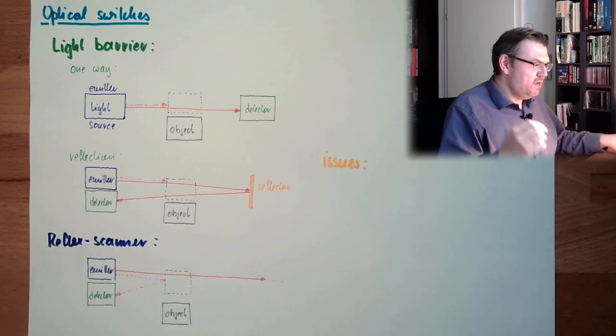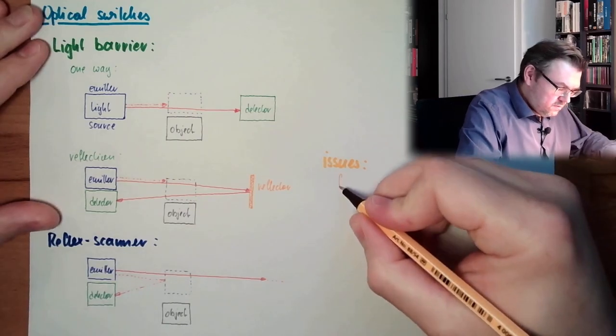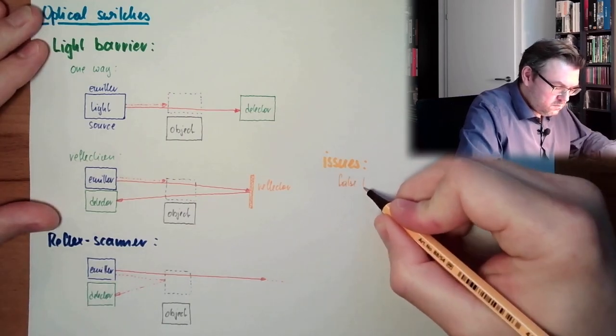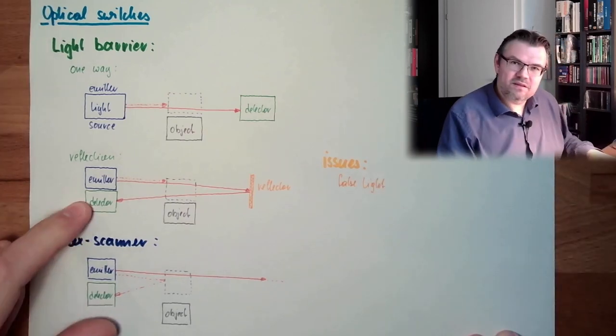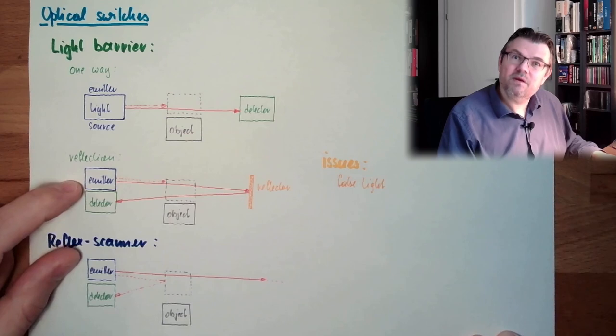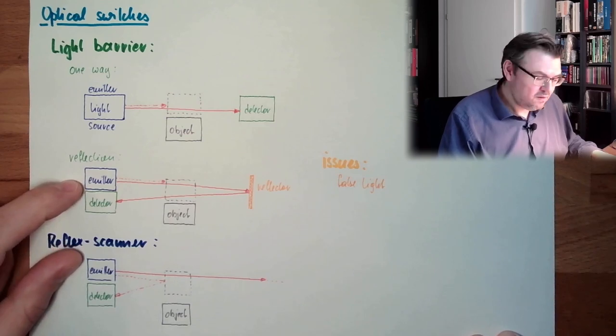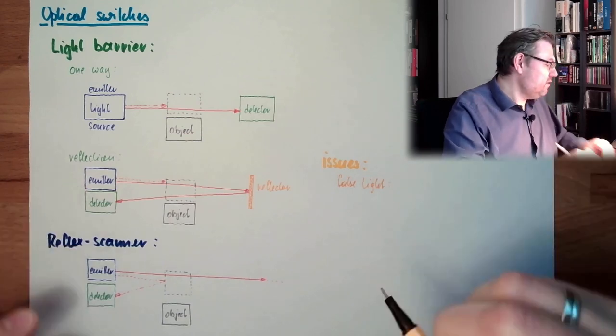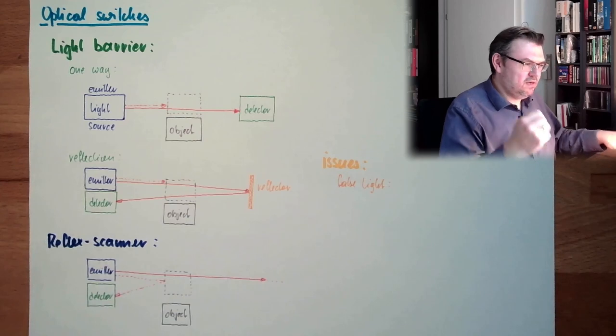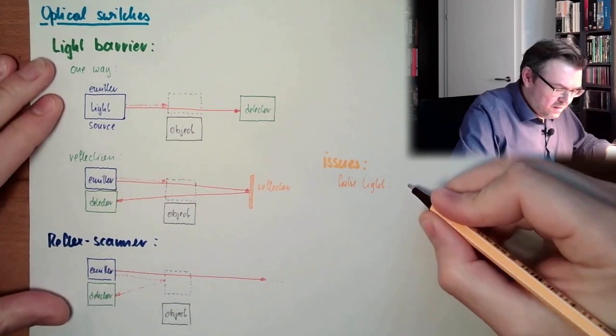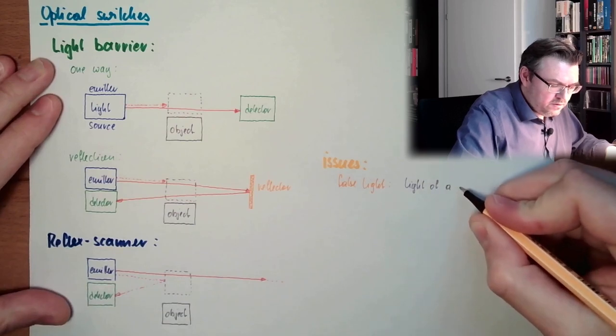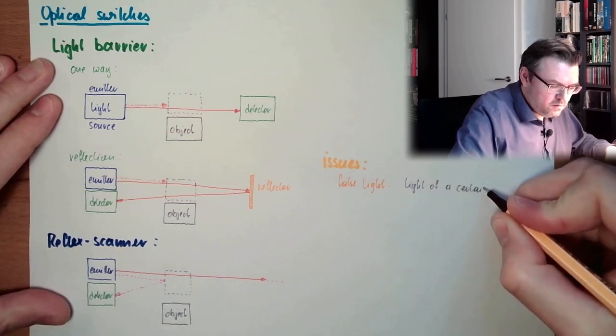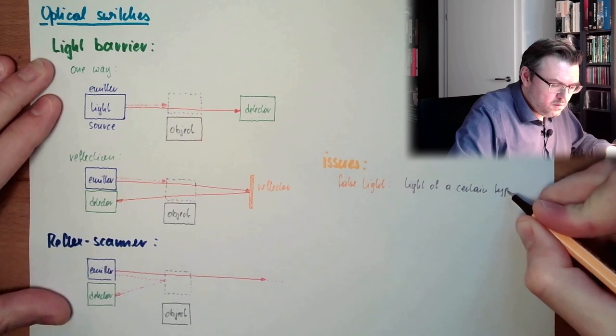Typical source of complication is false light. If the detector is not detecting the light emitted by the emitter, but some other light. So usual countermeasures are a light of a certain type.